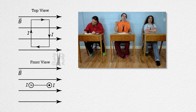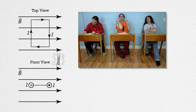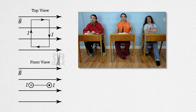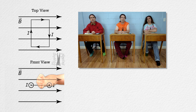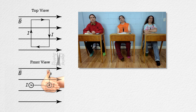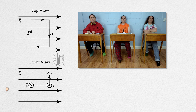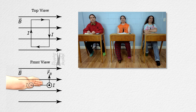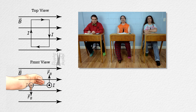For the current coming out of the screen on the right side of the rectangular loop, in the front view: fingers point out of the screen in the direction of the current, fingers curl to the right in the direction of the magnetic field, and thumb points up in the direction of the induced magnetic force on the right side of the loop. For the current going into the screen on the left side of the rectangular loop, still in the front view: fingers point into the screen in the direction of the current, fingers curl to the right in the direction of the magnetic field, and thumb points down in the direction of the induced magnetic force on the left side of the loop.